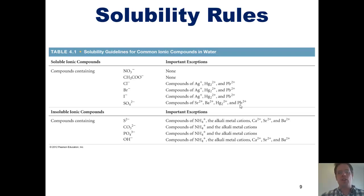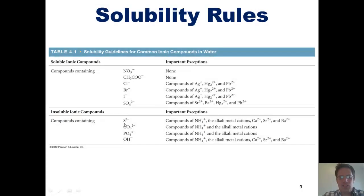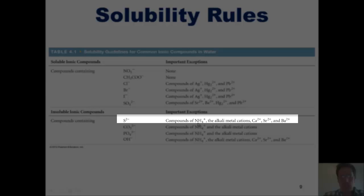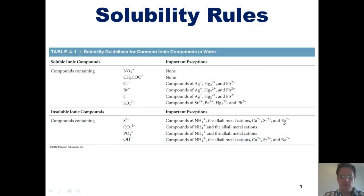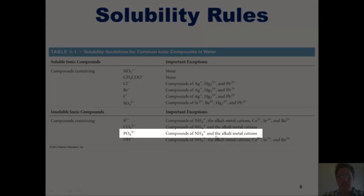The bottom half of this table indicates to us which types of ionic compounds are insoluble in water. It says, for instance, that any ionic compound containing sulfide, S2-, is insoluble in water, except for ammonium sulfide, any sulfide involving the alkali metals, which are the metals found in group 1 of the periodic table, calcium sulfide, strontium sulfide, and barium sulfide. Looking at another example, we can see phosphate, PO4-3. Any compound that has phosphate as its anion is insoluble in water, except for ammonium phosphate, and any phosphate that has an alkali metal as its cation, keeping in mind that alkali metals are the elements found in group 1 of the periodic table.